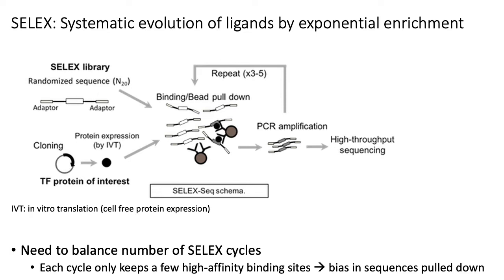The idea of the SELEX-seq protocol is that you start out with a library of completely random DNA oligos and you basically incubate your transcription factor of interest with that library of initially random oligos. In the first round of SELEX, your TF is going to bind to its target sequences of interest in your random pool of DNA oligos. You then use an antibody to pull down those fragments that are bound by your TF of interest.